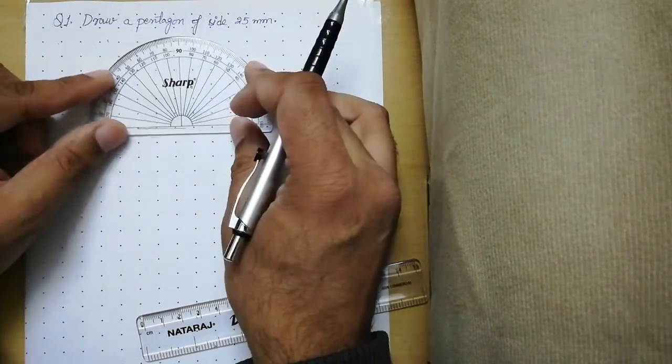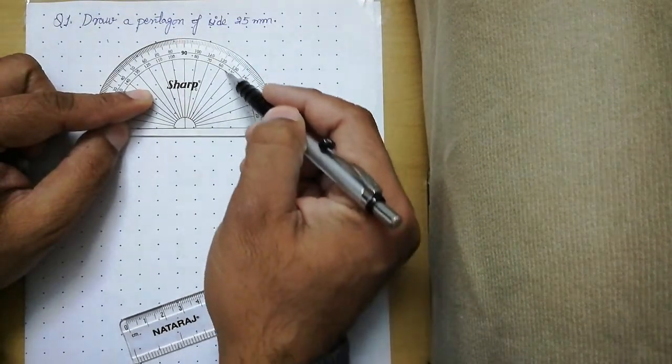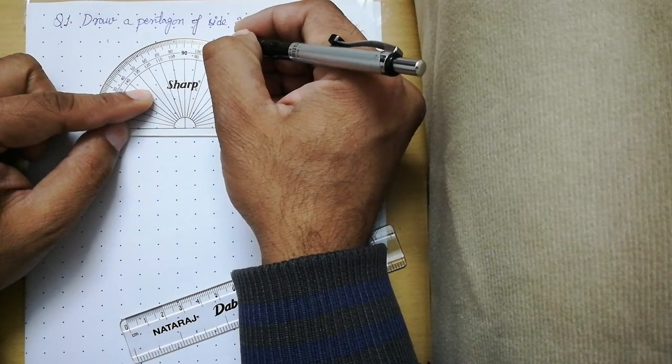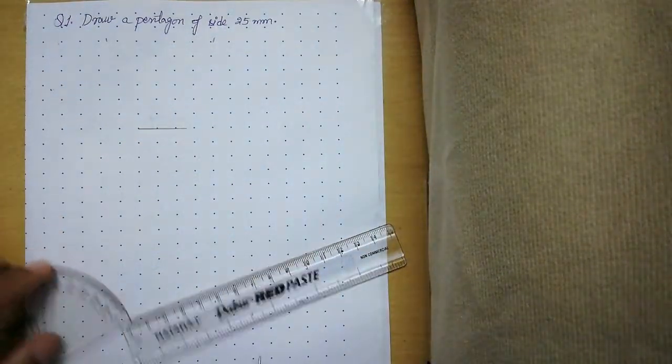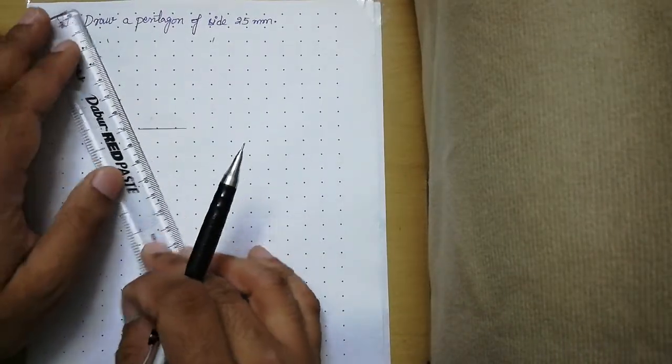the other end of the line. Now measure the angle from this side, zero to 70 plus two units more, so this is 72 degrees. Why are we doing this? Because the exterior angle is 72 degrees in case of a pentagon.